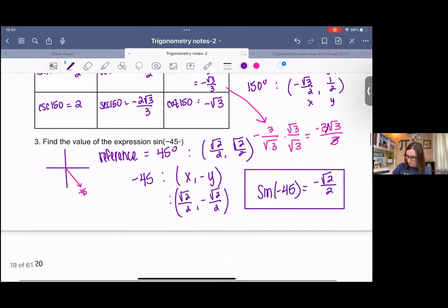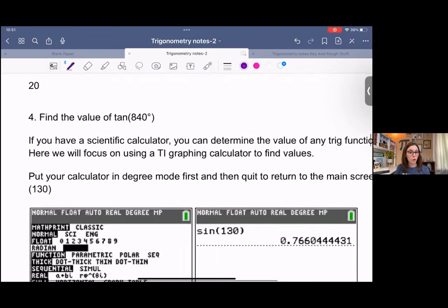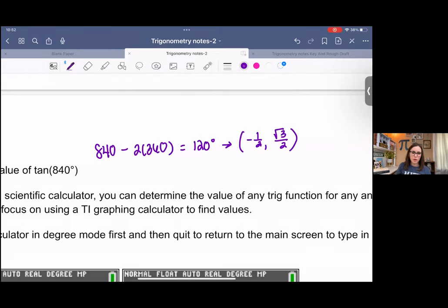Next one, we want to find the value of tangent 840. Pause it, try it, come back. 840 was pretty big. So I used multiples of 360 to find the coterminal side. So that means that they will have the same terminal side with 120 degrees.